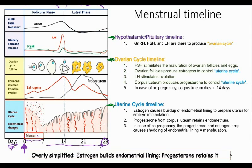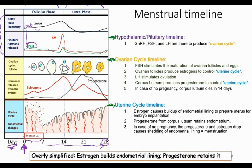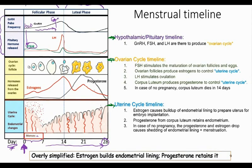In purple I've drawn out the hypothalamic-pituitary timeline. Starting at day zero, there's a low pulse frequency of GnRH, which is causing production of FSH — there's also some LH being produced, but we're talking about relative production. Right before ovulation, there's an increase in GnRH pulse frequency, and that's what triggers LH to be released. That big surge of LH is going to cause ovulation, switching us over to the luteal phase, and then GnRH goes back down to get ready for the next cycle.